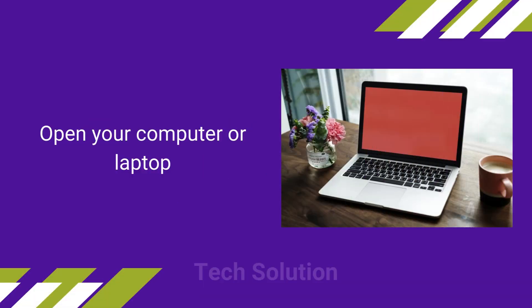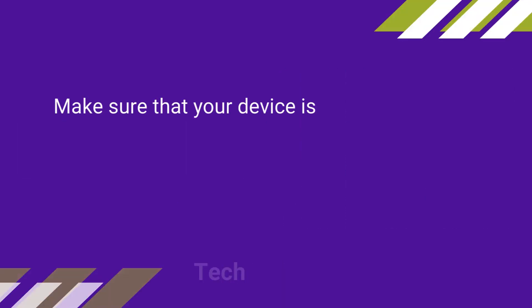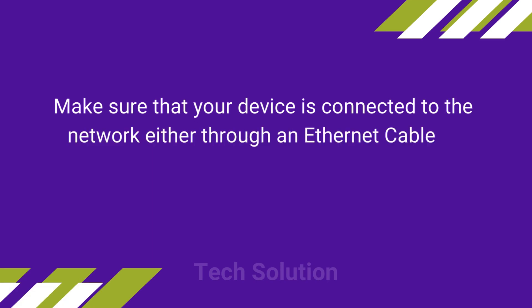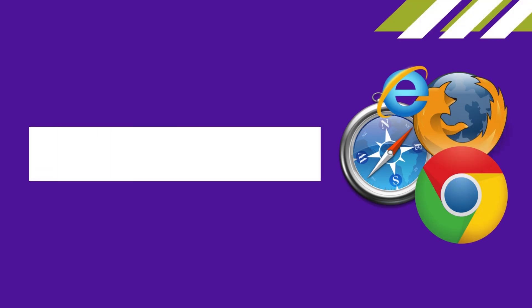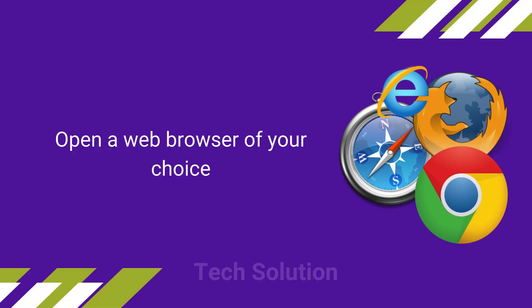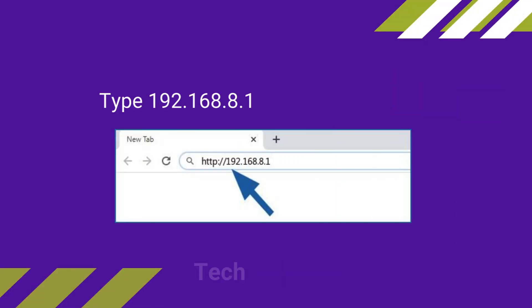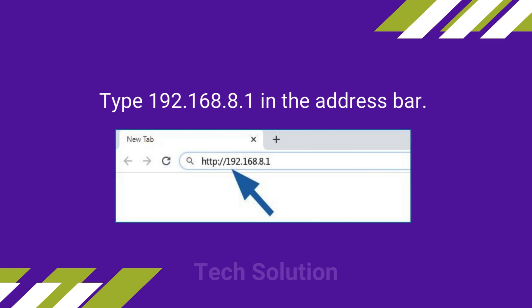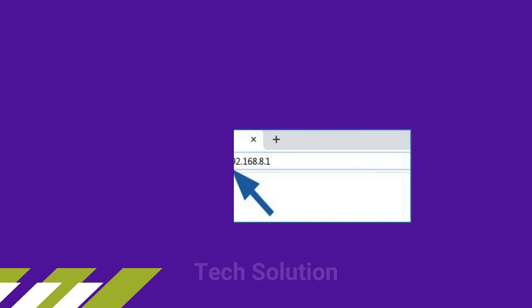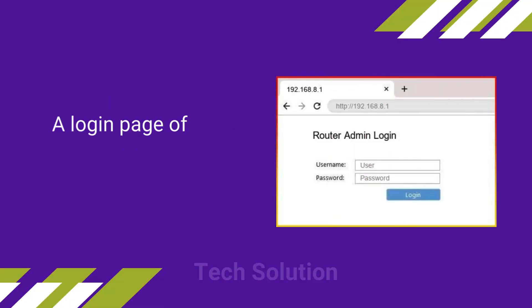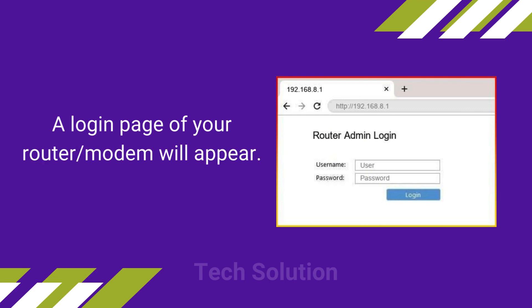Open your computer or laptop. Make sure that your device is connected to the network, either through an Ethernet cable or wirelessly. Open a web browser of your choice and type 192.168.8.1 in the address bar. A login page of your modem will appear.